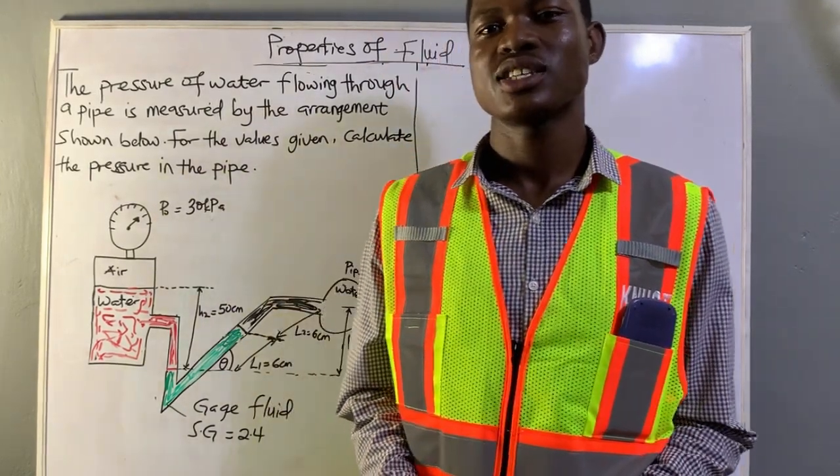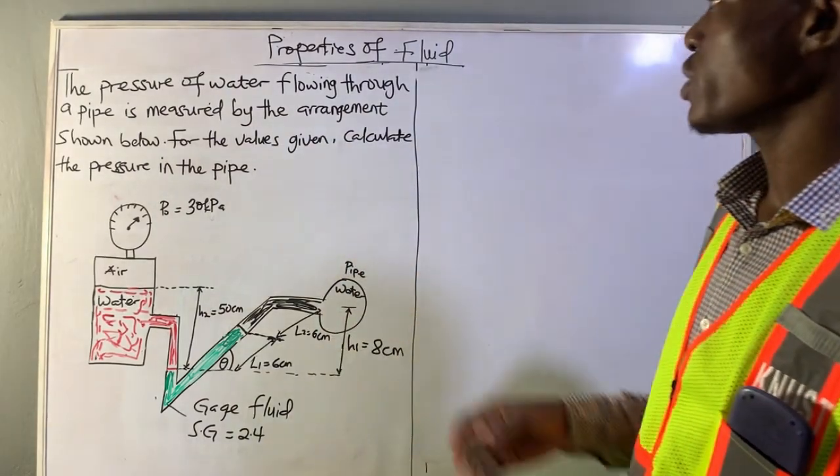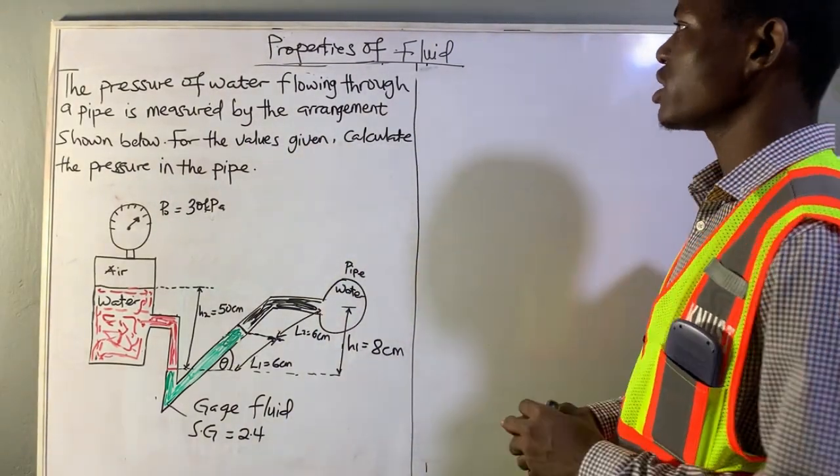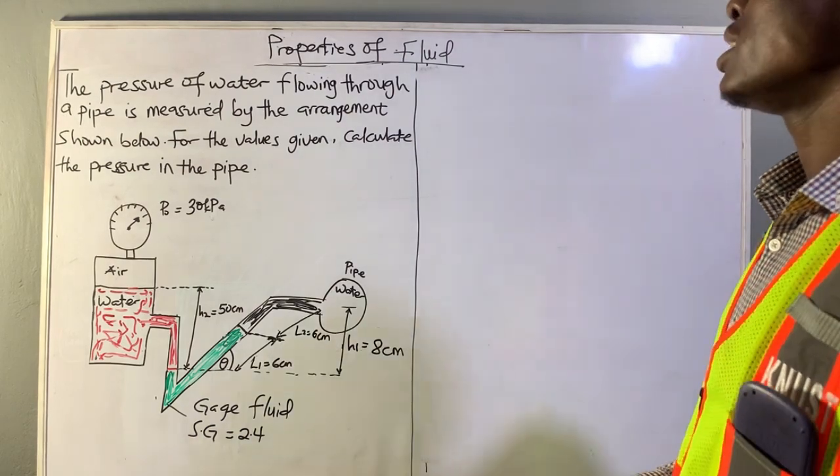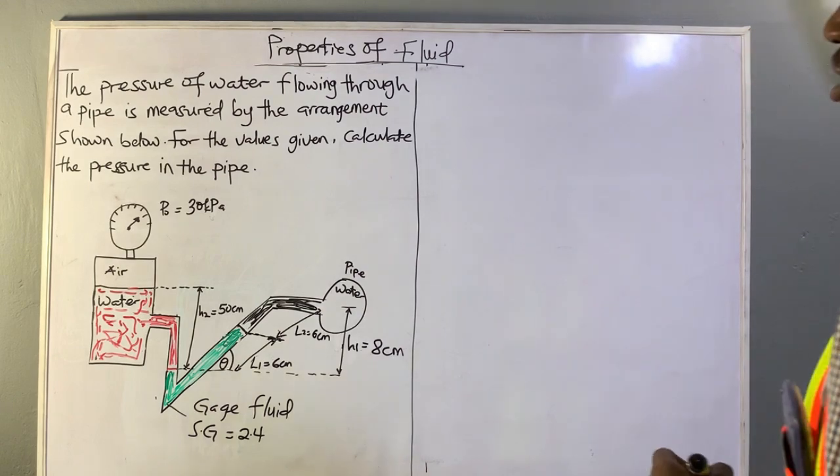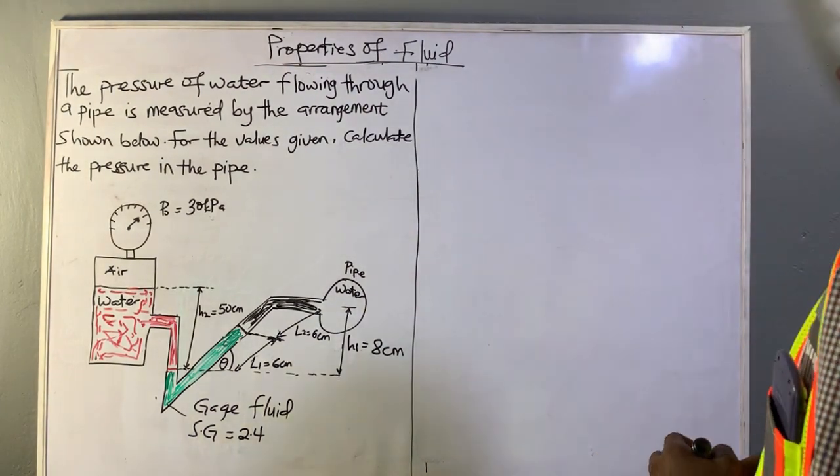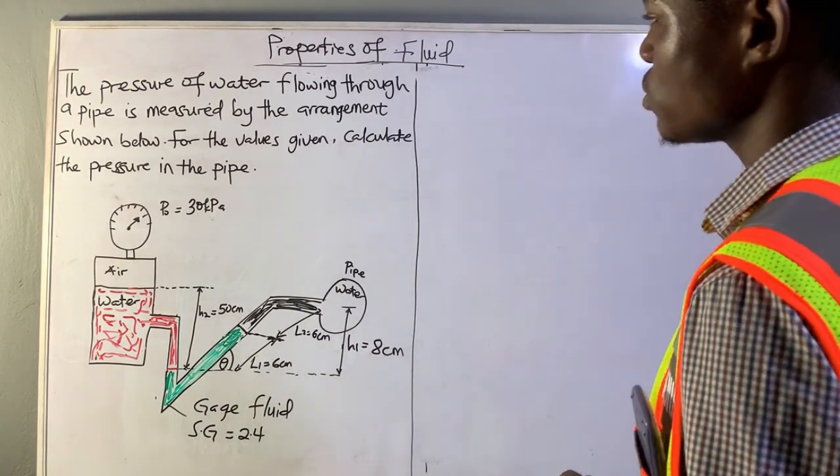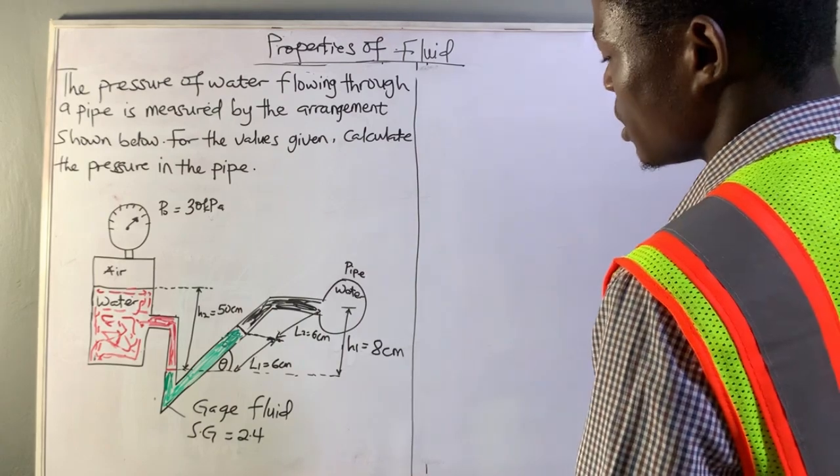Hello everyone, welcome back to this section. In this video, we are going to solve the question we have here on our board. And it's an example from an inclined steel manometer. The question reads, the pressure of water flowing through a pipe is measured by the arrangement shown below. For the values given, calculate the pressure in a pipe.